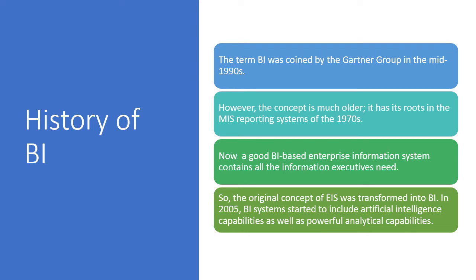A good business intelligence-based enterprise information system contains all the information executives need. Real-time data is collected, analyzed, and provided to managers for decision making. The original executive information system was transformed into business intelligence. In 2005, business intelligence systems started to include artificial intelligence capabilities, and today they use sophisticated technologies like artificial intelligence and machine learning for analysis.